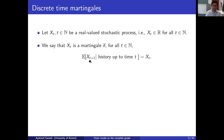So the expectation at time t plus 1 is the same as the value at time t. I'm being a bit vague here about what I mean by history up to time t. Usually this just means all the values x_s for s up to t. And if the process is Markovian, that's all the information you need.